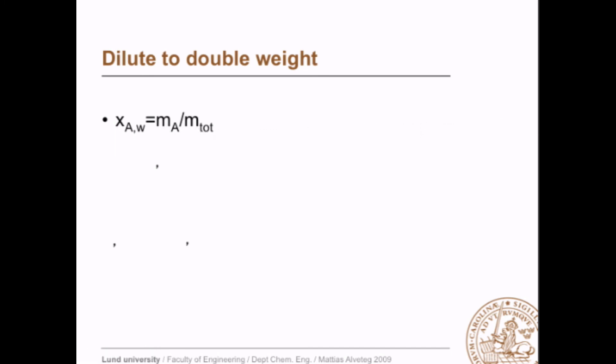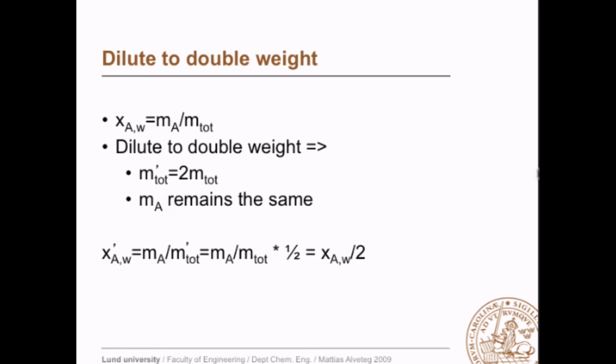Now when you dilute to double weight, you keep m_A the same and you double m_tot by adding B. So the new m_tot equals 2 of the old m_tot and m_A remains the same, which means that our new weight fraction equals the mass of A divided by the new m_tot, but the new m_tot is twice as big. So therefore we get the new weight fraction as the old weight fraction divided by 2.